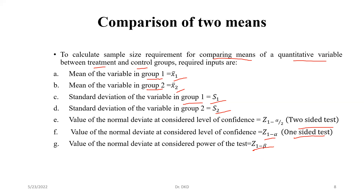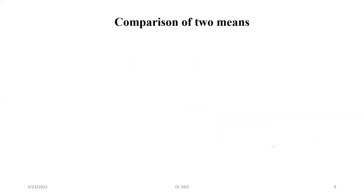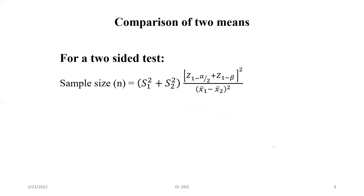We are going to calculate the minimum sample size for comparing two means, where each group's mean and standard deviation is reported in the published article. For that, we require the formula. For a two-sided test, we use this formula.